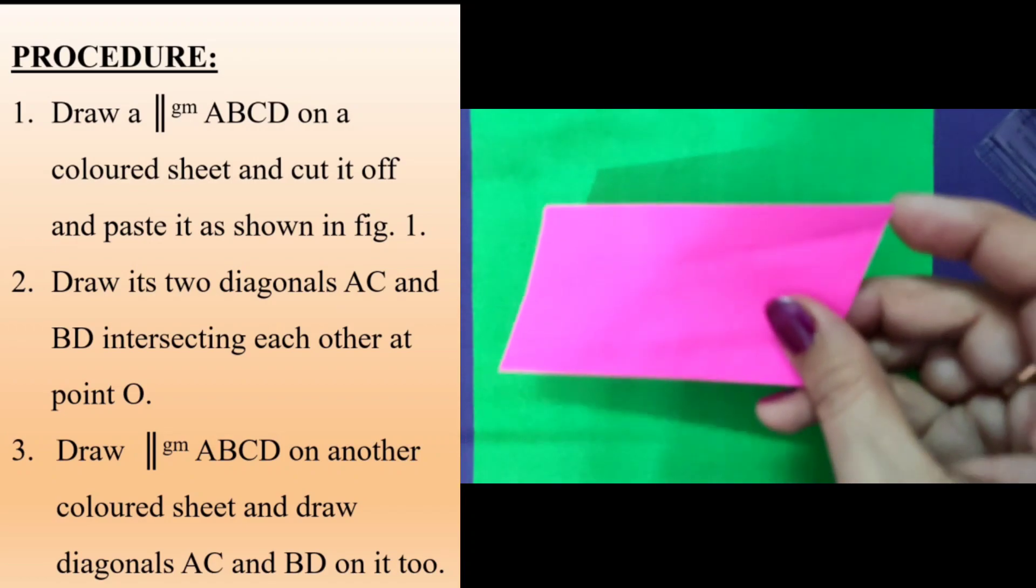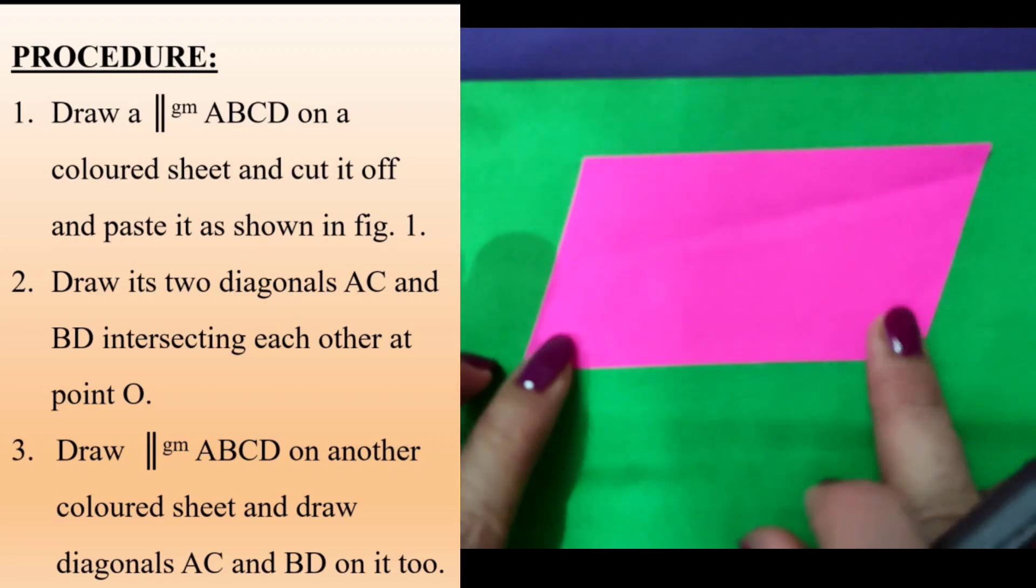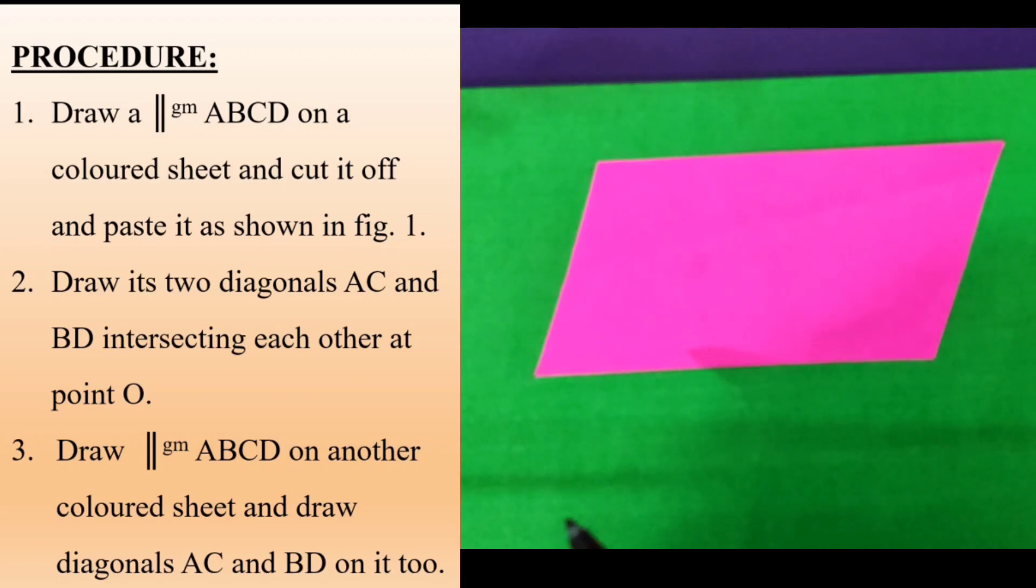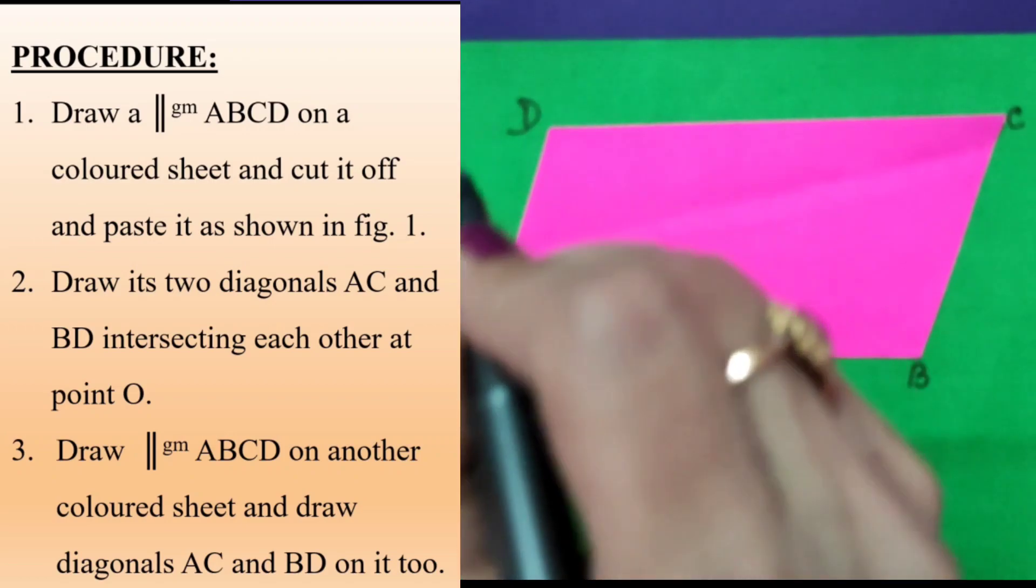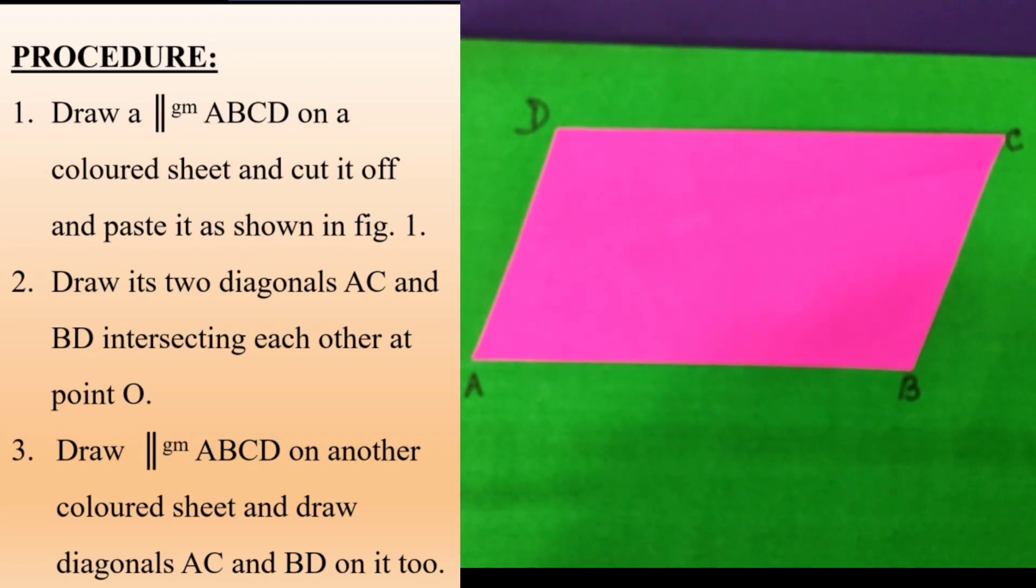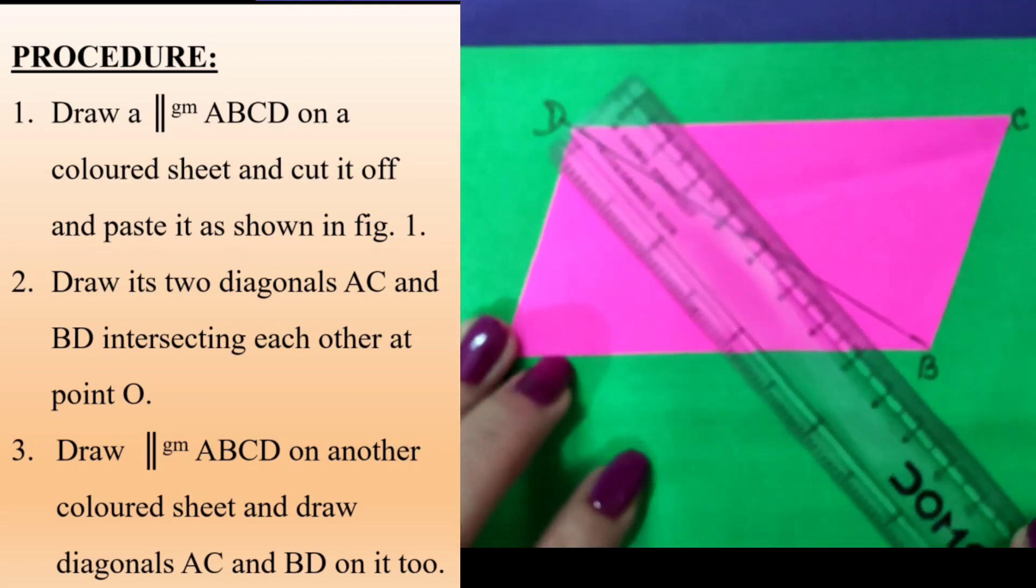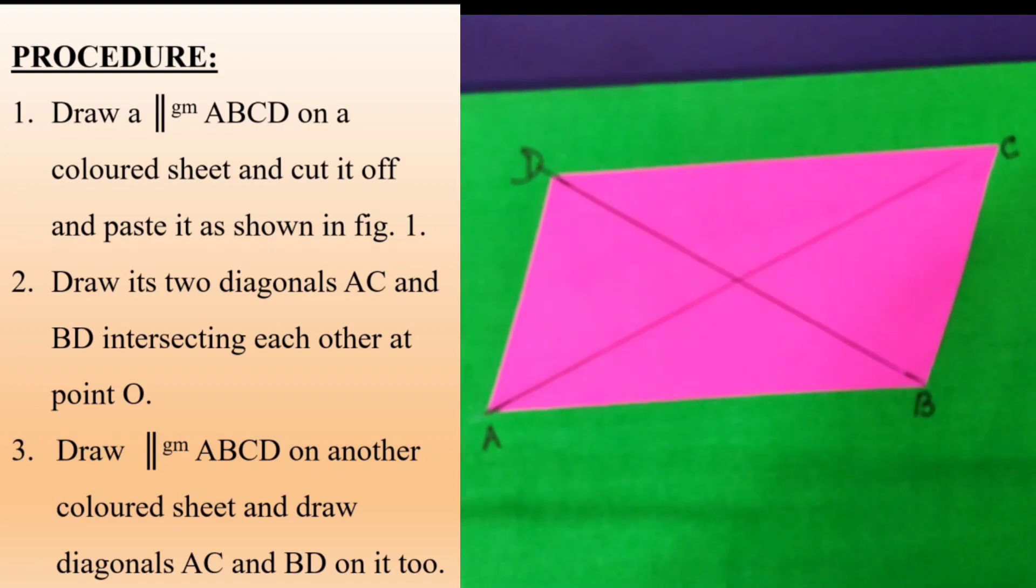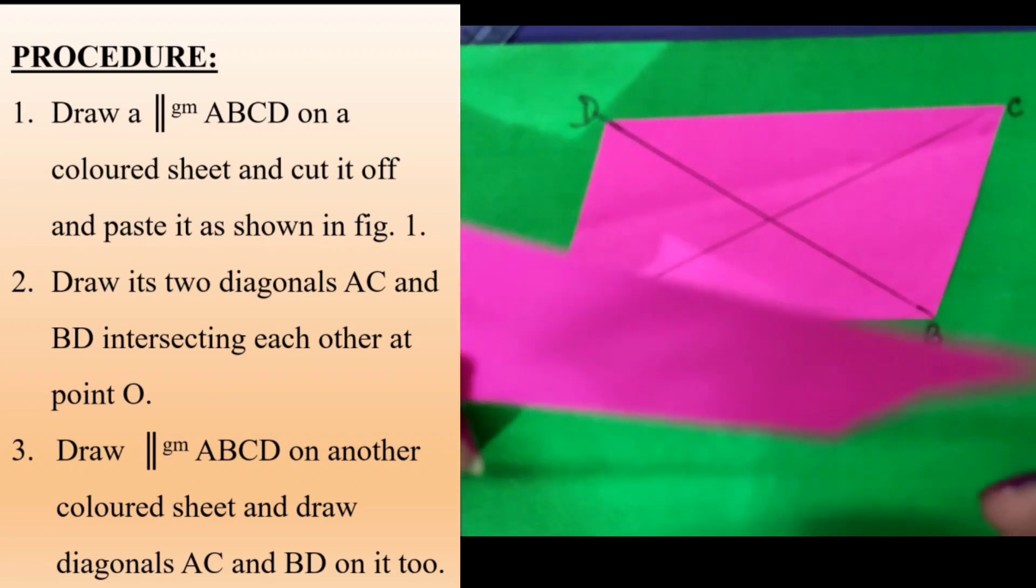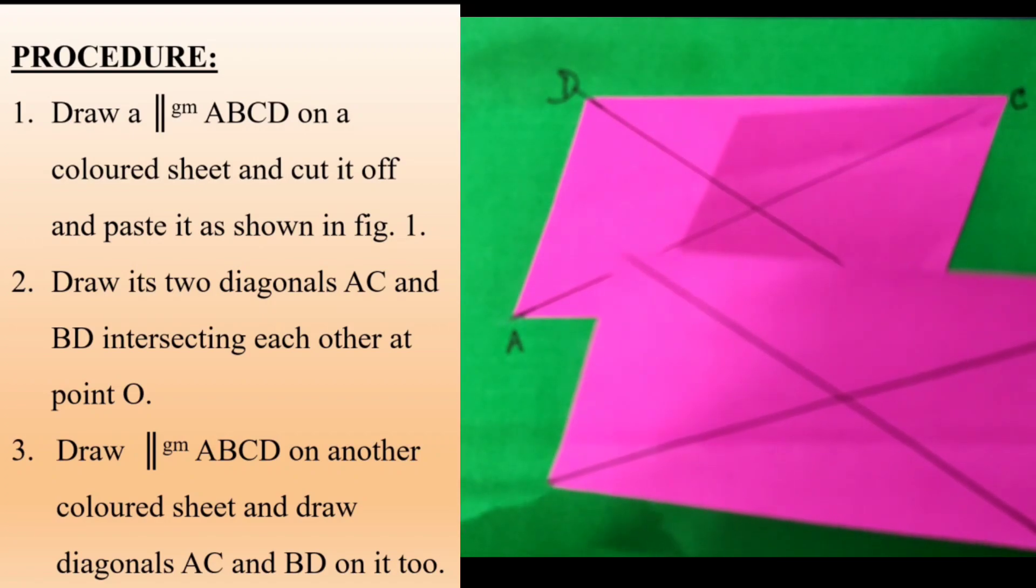I will be pasting it on my lab file. This is the first parallelogram pasted. I label it as A, B, C, and D. I draw the diagonals of the parallelogram, BD and AC. These are the two diagonals that I have made. Exactly the same thing I will be doing with the second parallelogram also. I have the two parallelograms with diagonals that have been made.